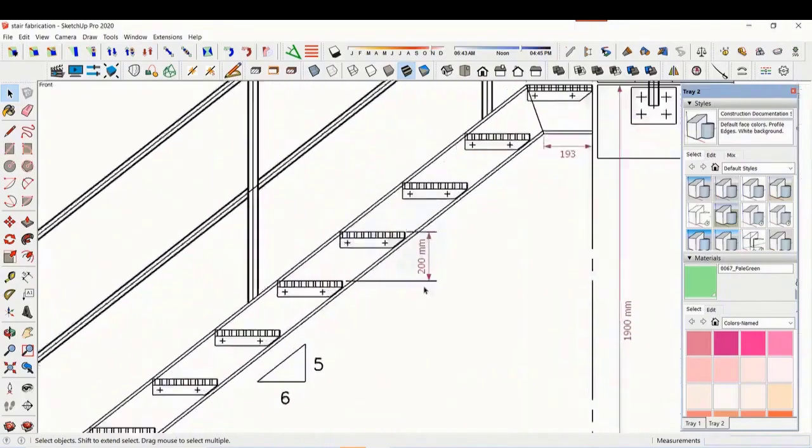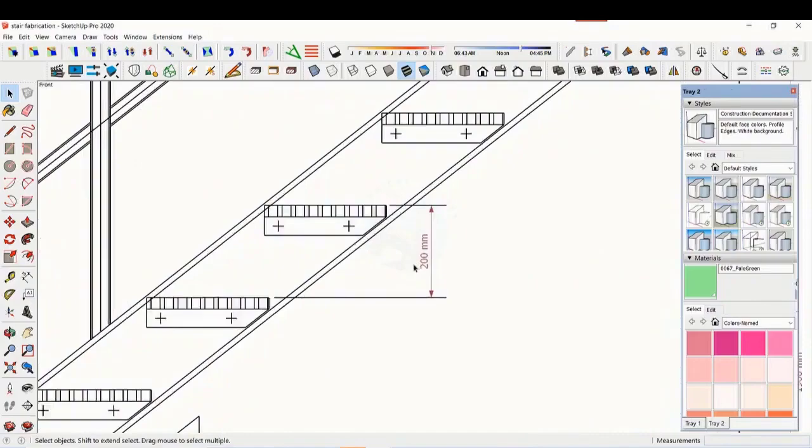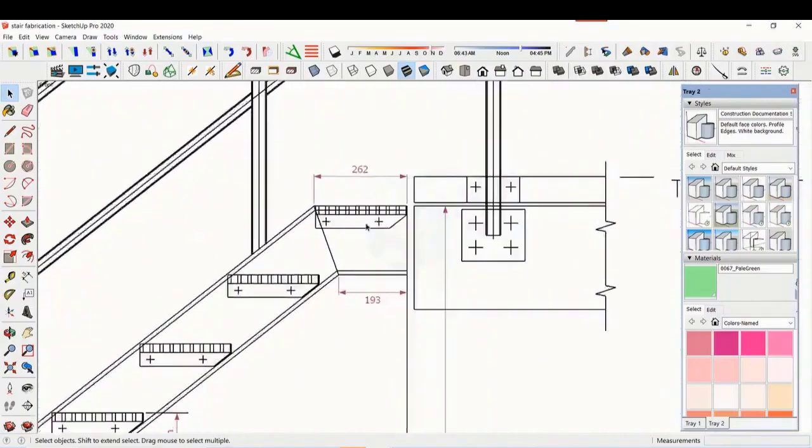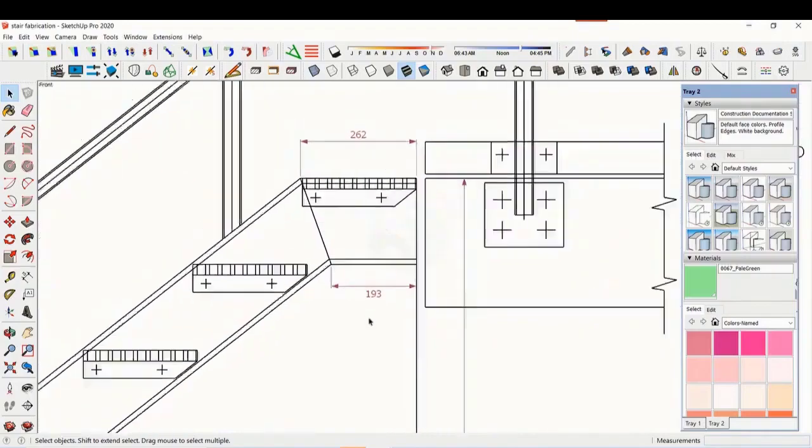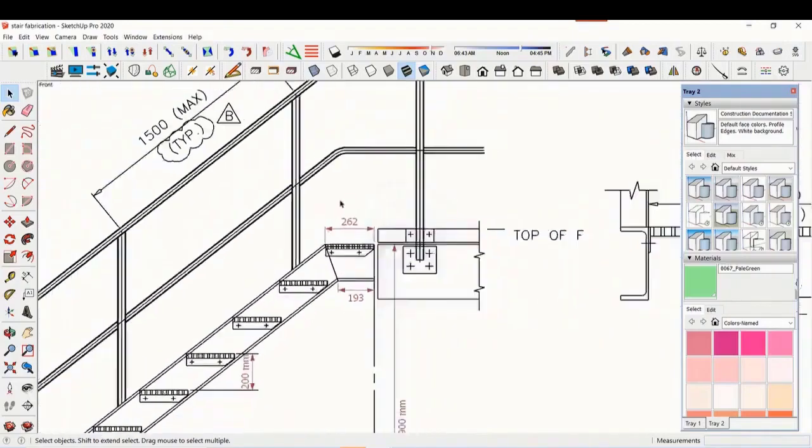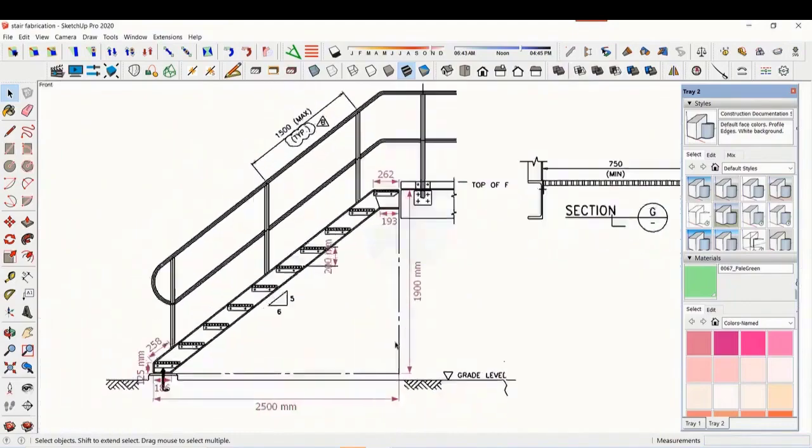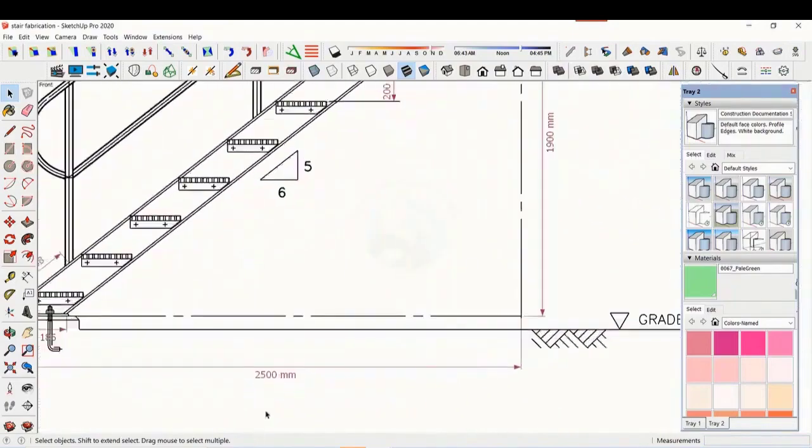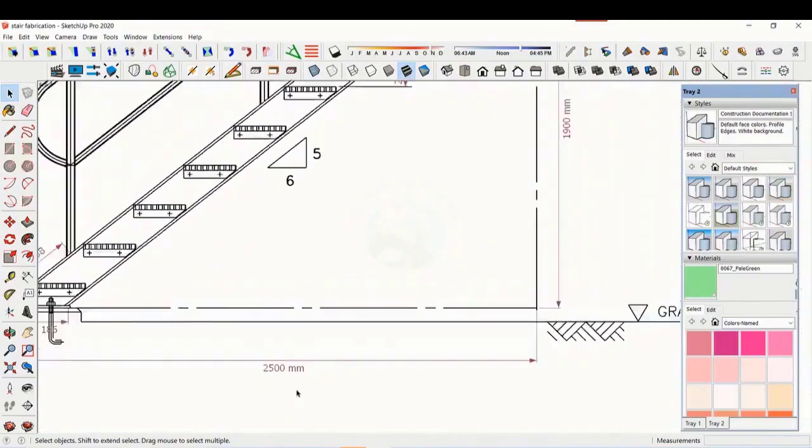The basic structure is made from ISMC 200. The height of the staircase is 1900 millimeters and the length is 2500 millimeters. The width of the staircase is 750 millimeters.